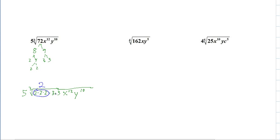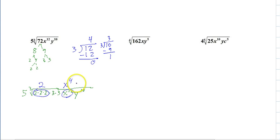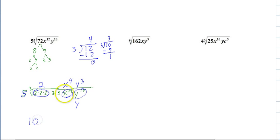We don't have enough 3's, which means those are staying inside. Now if we take 12 divided by 3, it gives you 4 and nothing, so all of them come out. Now let's do 10 divided by 3 — that means we can take 3 out but have 1 left in. So on the outside we have 5 times 2, which is 10, x to the 4th, and y cubed. Then on the inside we have a cube root of 9y.